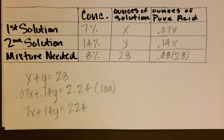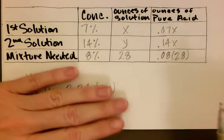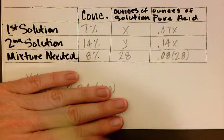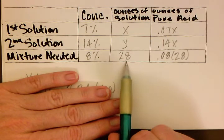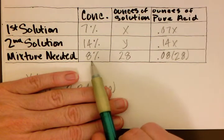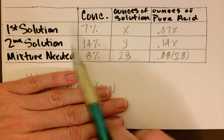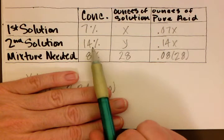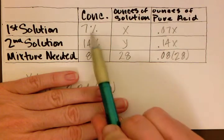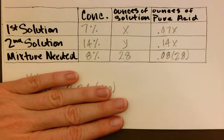So what we want to do is set up a table. When we set up that table, it tells us that she needs 28 ounces of the 8% solution. We want to know how many ounces of the 14% and how many ounces of the 7% that we should mix together in order to get what we're looking for.